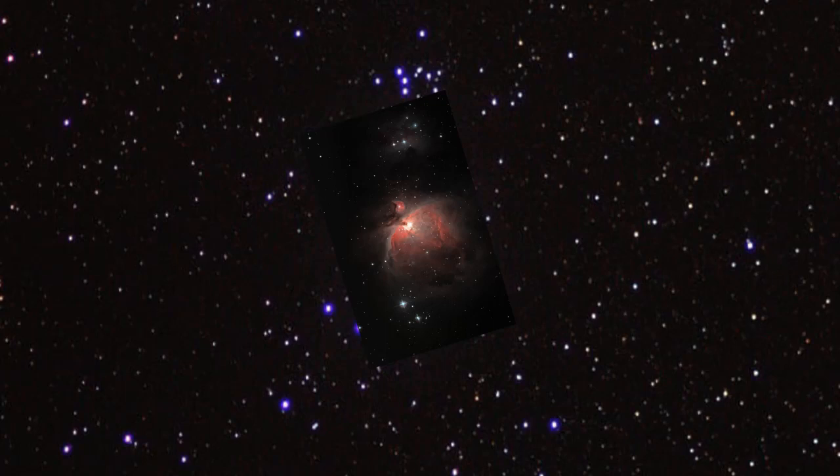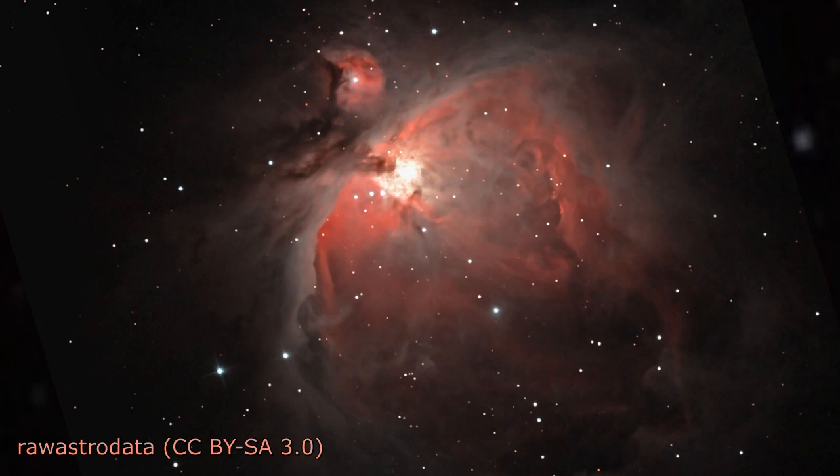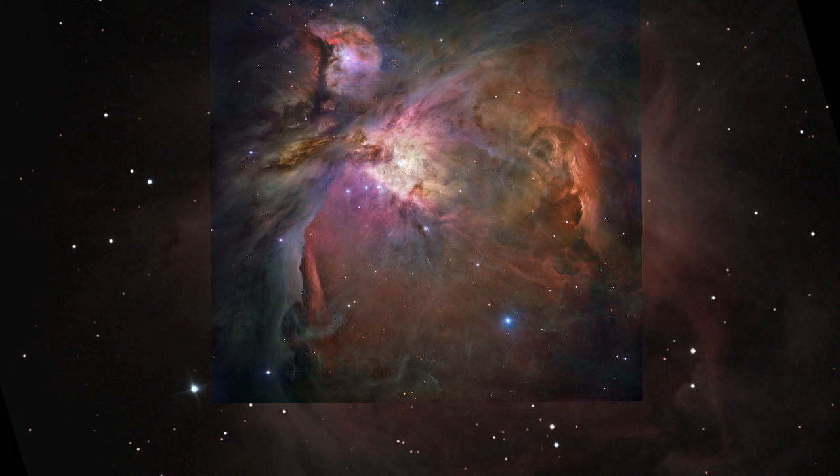About the same apparent diameter as the full moon, this is the Orion Nebula, 1500 light-years away. There are about 3,000 stars in this image, and the Orion Nebula is an active star-forming region.